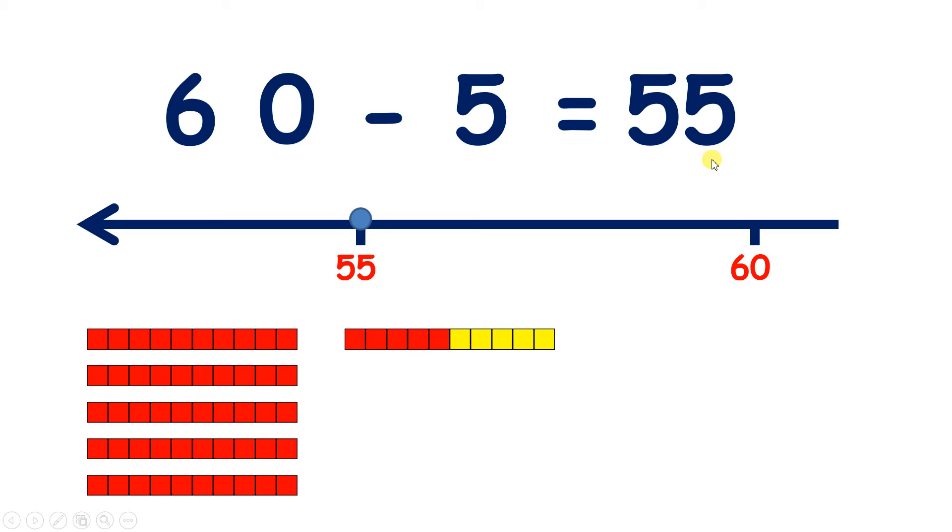Now it's important to understand the units digit isn't 5 because we're taking away 5. It's 5 because if we have 5, we need another 5 to make the number bond to 10. Now this might be a bit confusing, so let's look at another example.